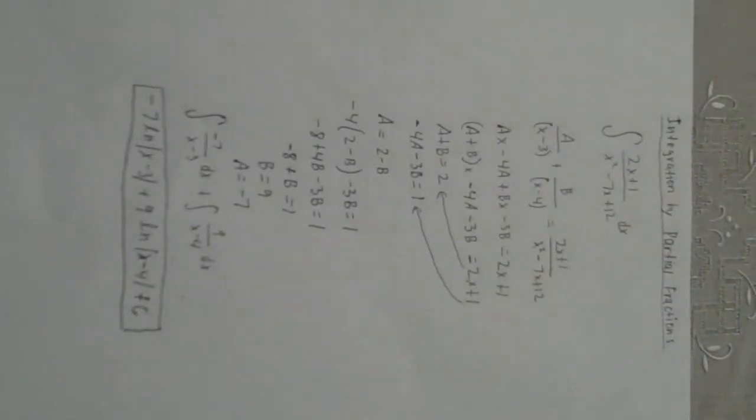Then you take the coefficient of x which is 2 and set it equal to a plus b, and the constant which is 1 and set it equal to negative 4a minus 3b.